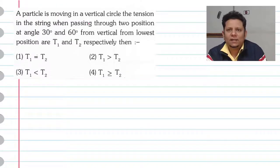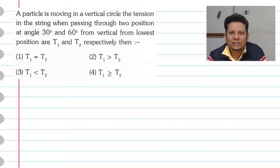Next question. The question says: A particle is moving in a vertical circle. The tension in the string when passing through two positions at angle 30°